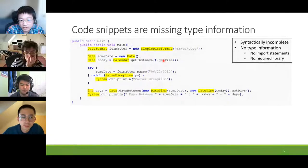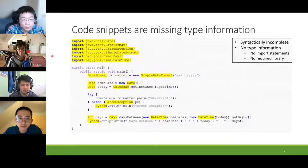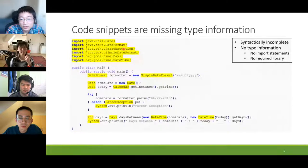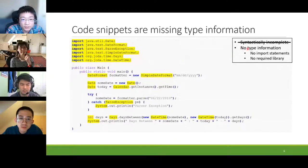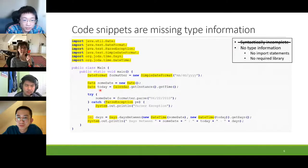The fully qualified names for these types are generally specified in import statements, which are not present, nor is there any library information to guide us. After import statements are added, the code snippet is finally ready for real-world use. In general these challenges make it hard to reuse code snippets from the internet. In this work we focus on using type inference to infer the fully qualified names of types found in the code snippet and use that to add import statements to make the code compilable. Our unique insight is to leverage partial semantics of the code rather than resorting to machine learning based approaches.